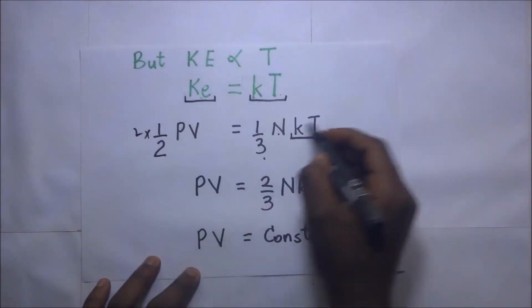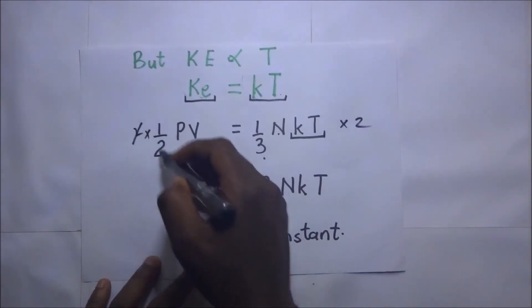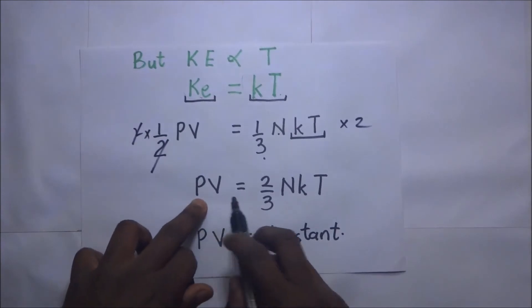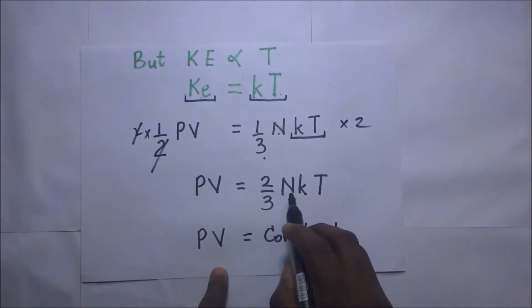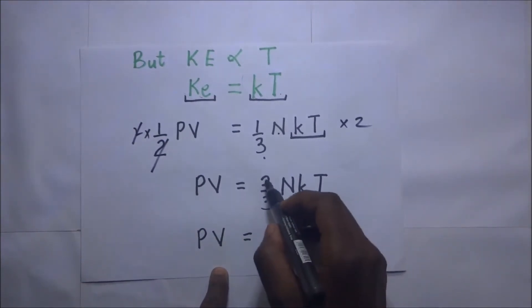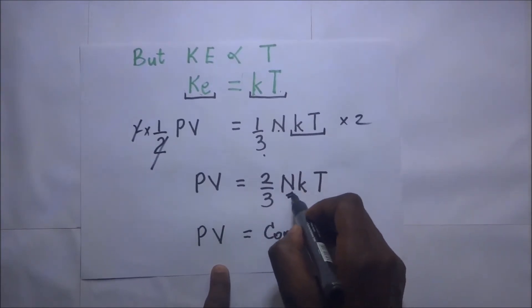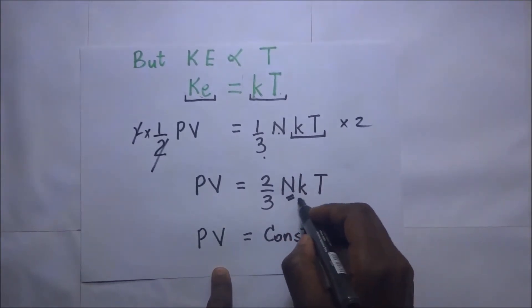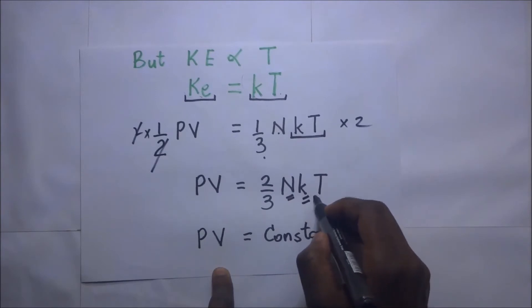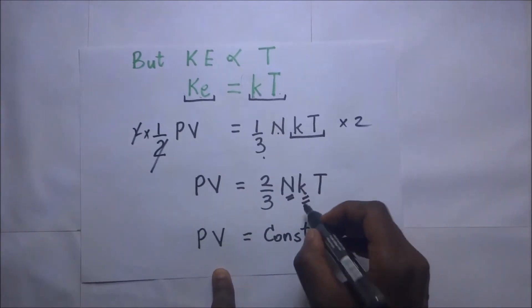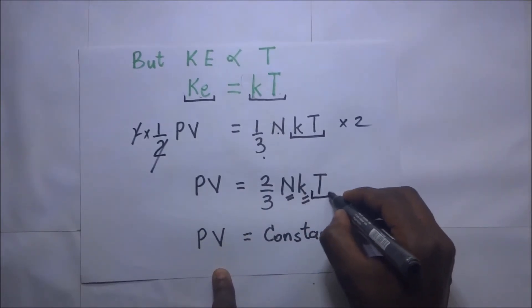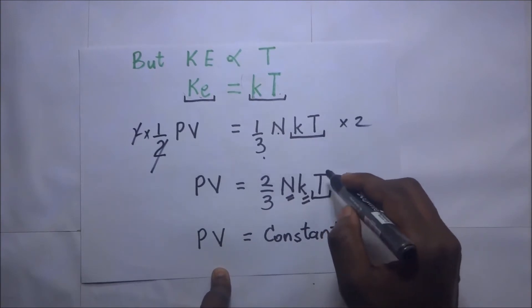times two right there, times two right there, so that we eliminate these twos. We remain with PV, giving us two-thirds times N KT. Now you'll realize that this is two-thirds times N. N is the number of particles, which is constant. K is the constant of proportionality right there, which is also constant. And now when you look at this value of temperature T,